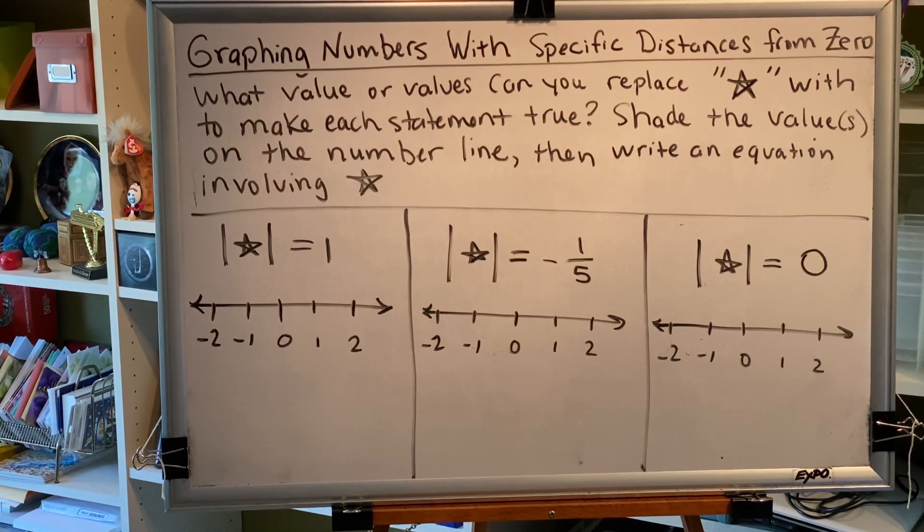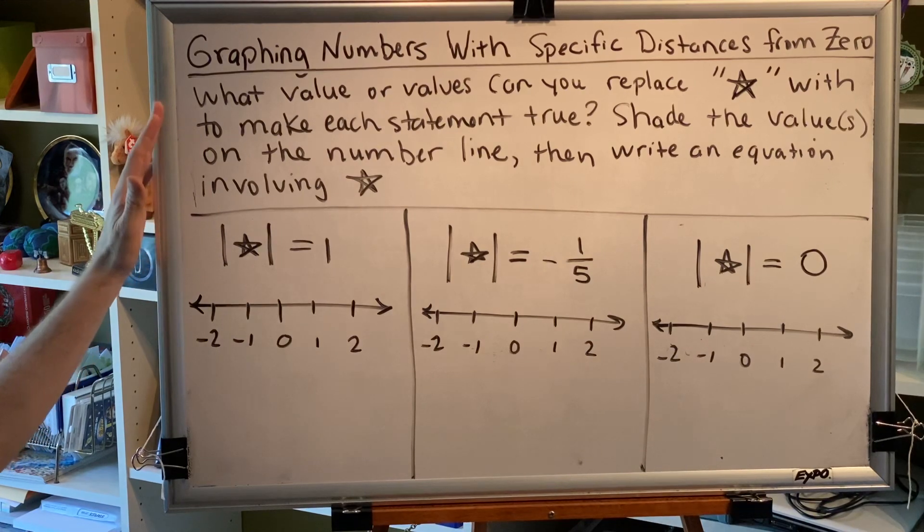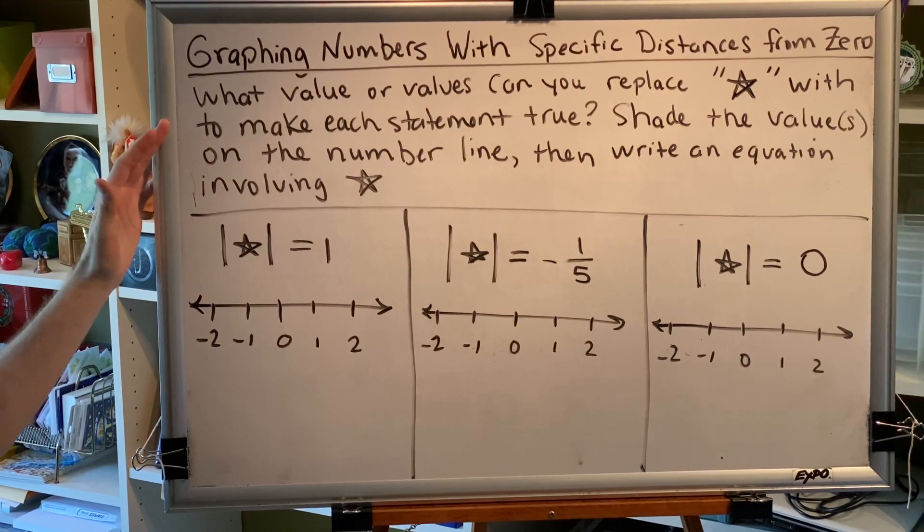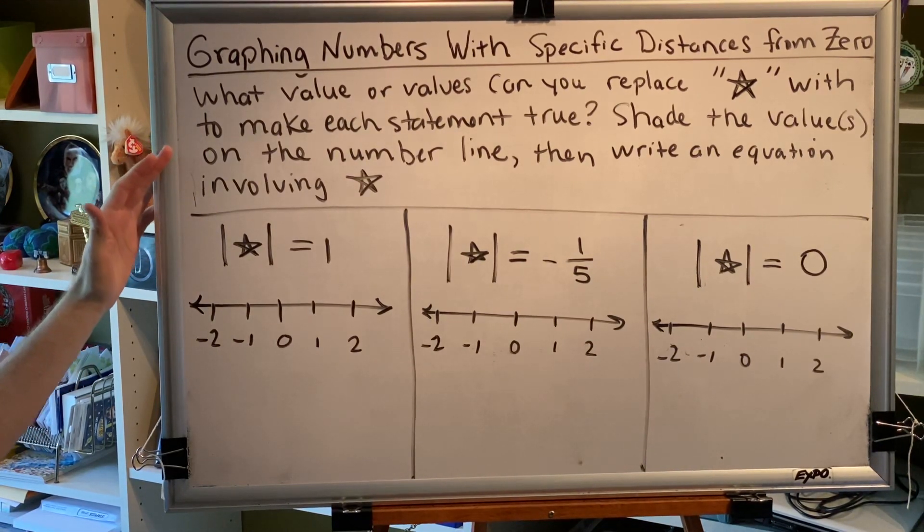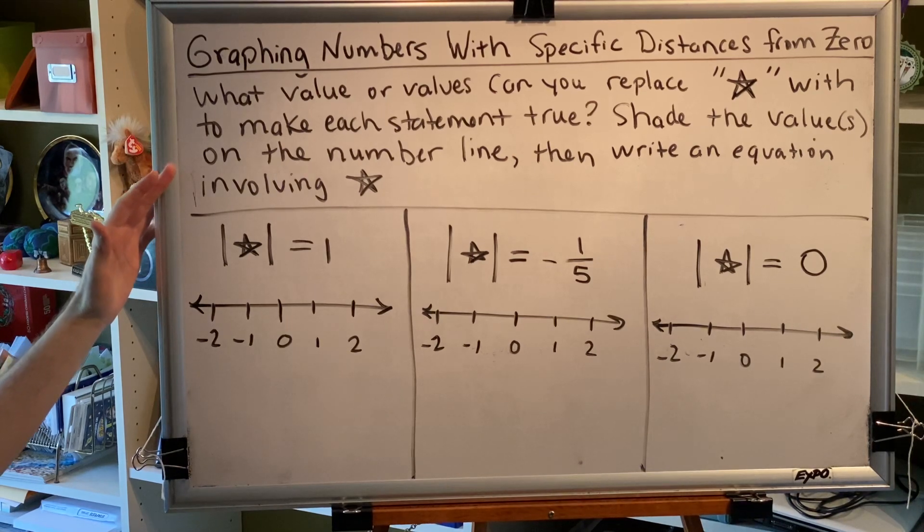The topic of this video is graphing numbers with specific distances from zero. Let's look at a few problems. What value or values can you replace star with to make each statement true? Shade the values on the number line, then write an equation involving star.